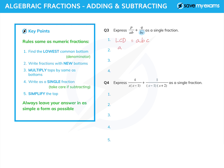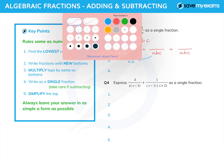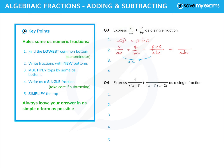So p over AB plus q over BC equals two fractions both over ABC. How do I get from AB to ABC? I multiply by c, so I multiply the top by c as well: p times c. For the second fraction, I multiply BC by a to get ABC, so I've got q times a. Writing it all over ABC and in alphabetical order, I get cp plus aq over ABC, and no more simplification is needed.